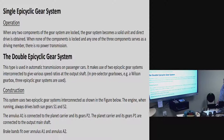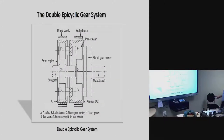When any two components of the gear system are locked, the gear system becomes a solid unit — the whole unit turns as one, giving a one-to-one ratio — direct drive. When none of the components is locked and any one of the three components serves as the driving member, there is no power transmission — basically neutral.